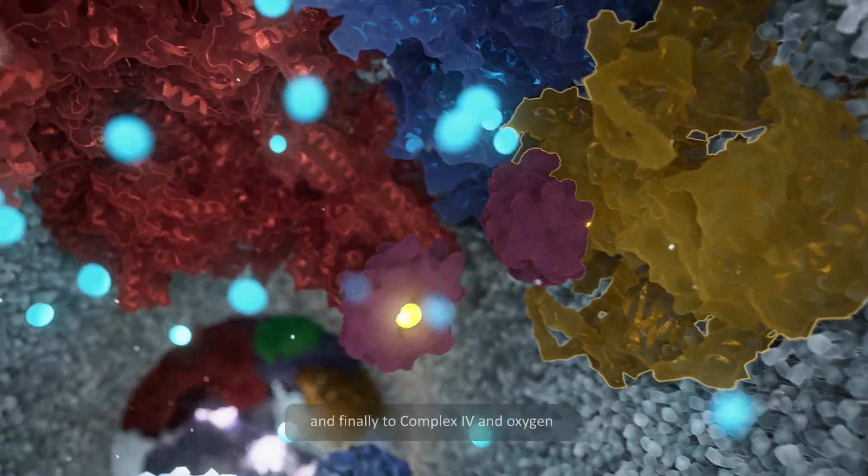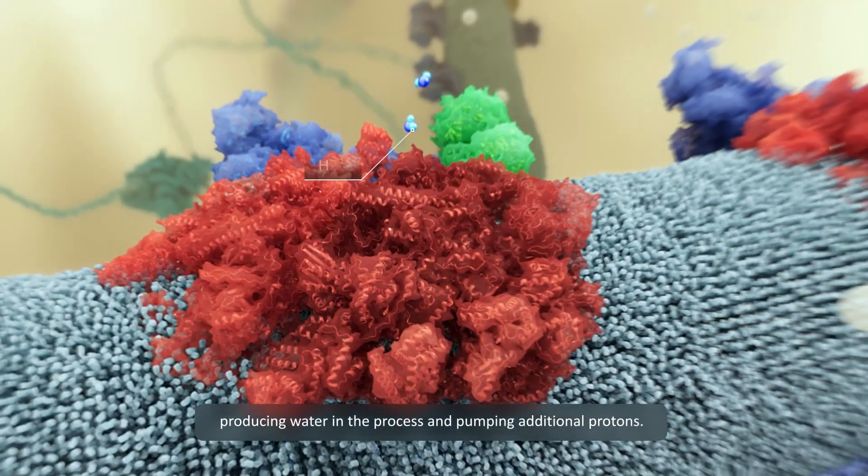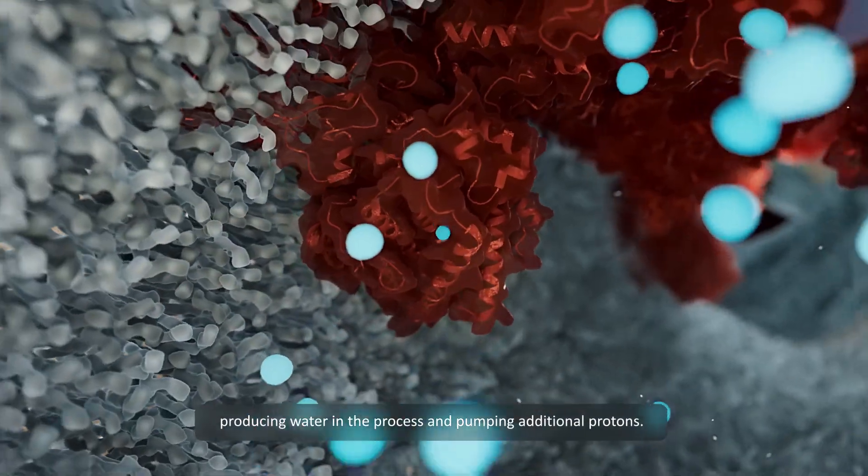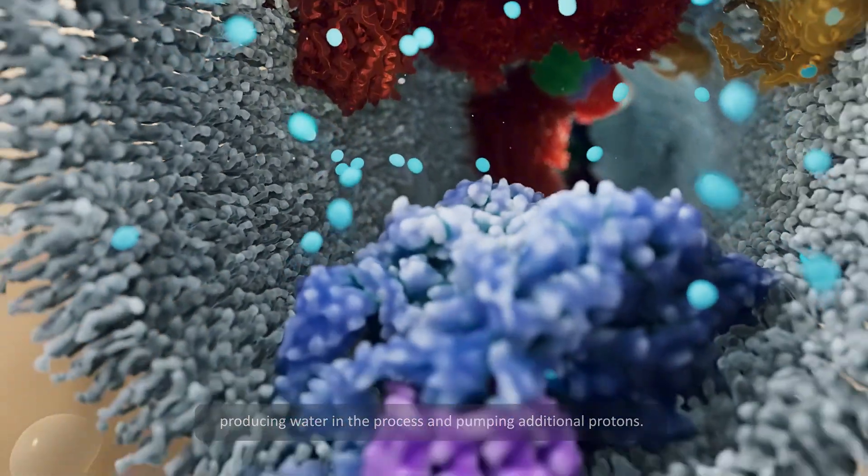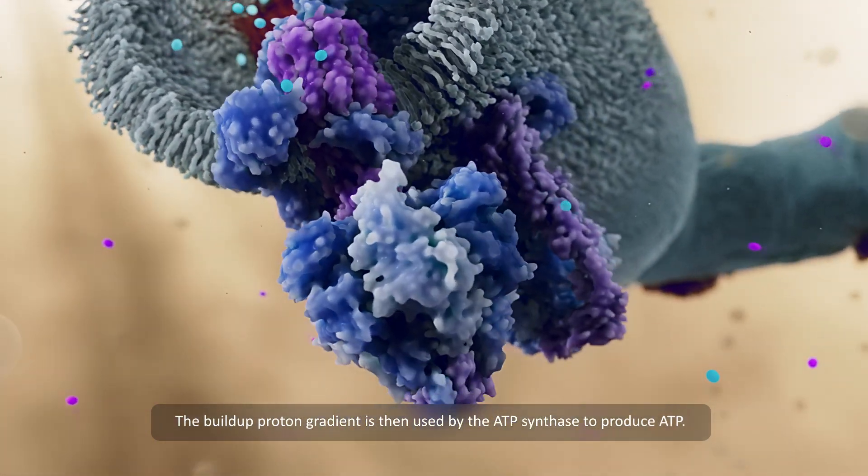And finally to complex 4 and oxygen, producing water in the process and pumping additional protons. The build-up proton gradient is then used by the ATP synthase to produce ATP.